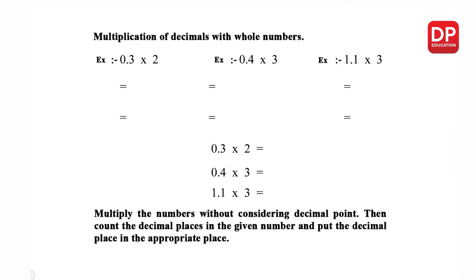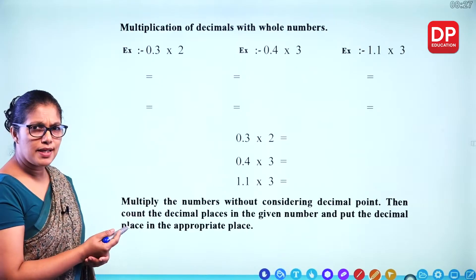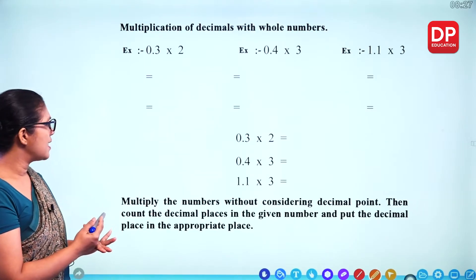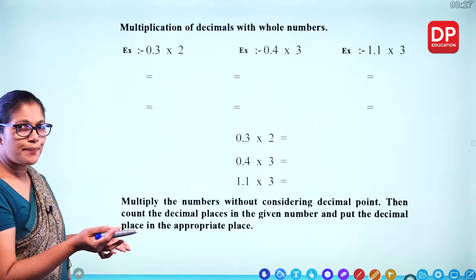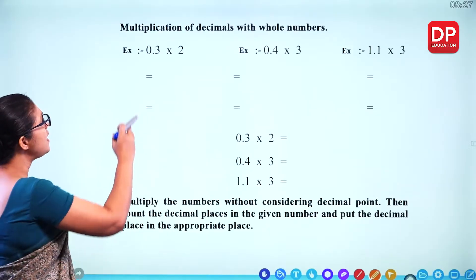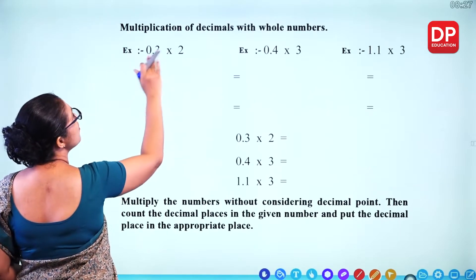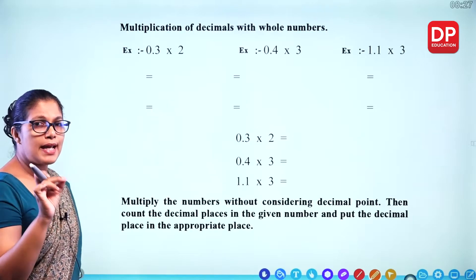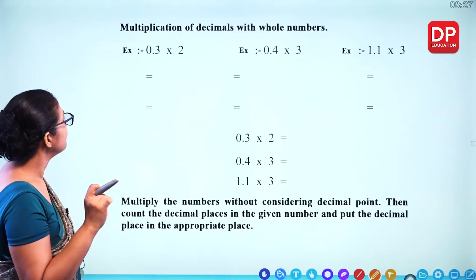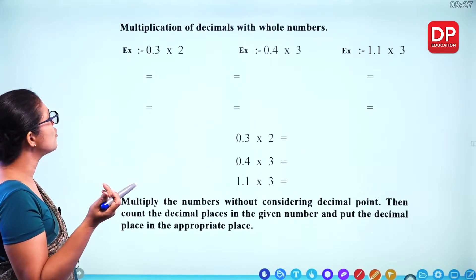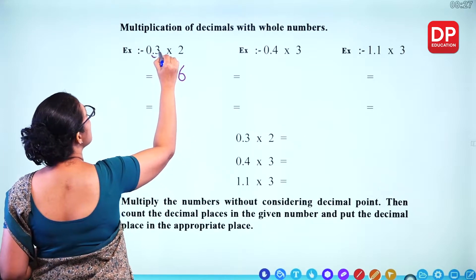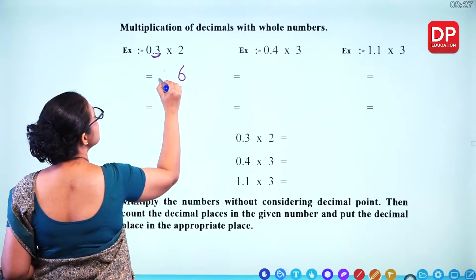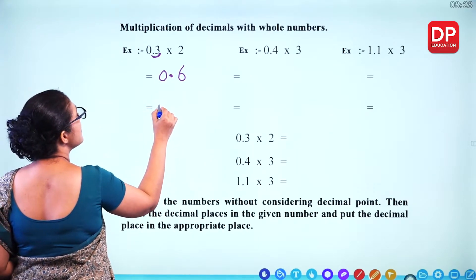Multiplication of decimals with whole numbers. How do we multiply a decimal number by a whole number? The first thing is to ignore the decimal point — just do normal multiplication — then consider how many decimal places are in the original question and keep the decimal place in the appropriate position. For example, 0.3 times 2: ignore the decimal, 3 times 2 is 6. There is 1 decimal place, so the answer is 0.6.